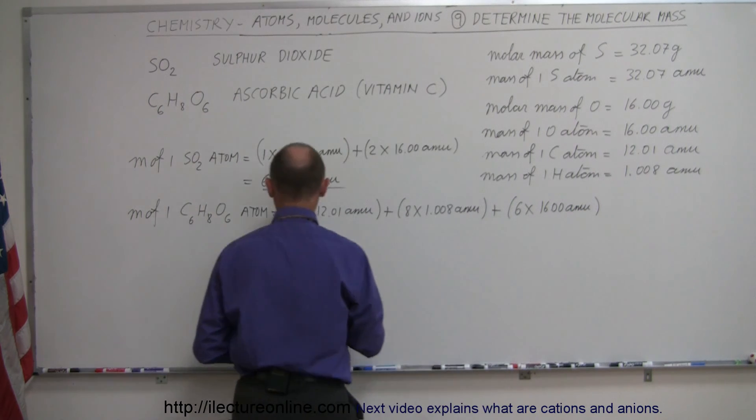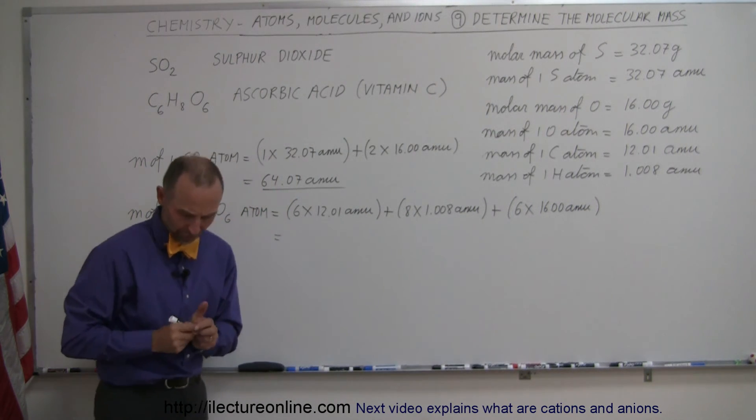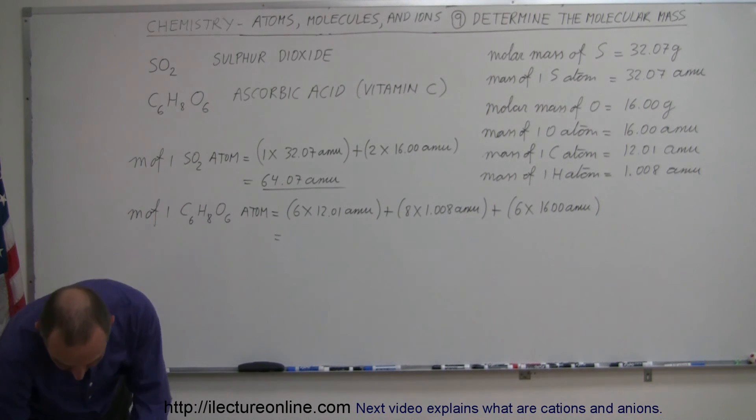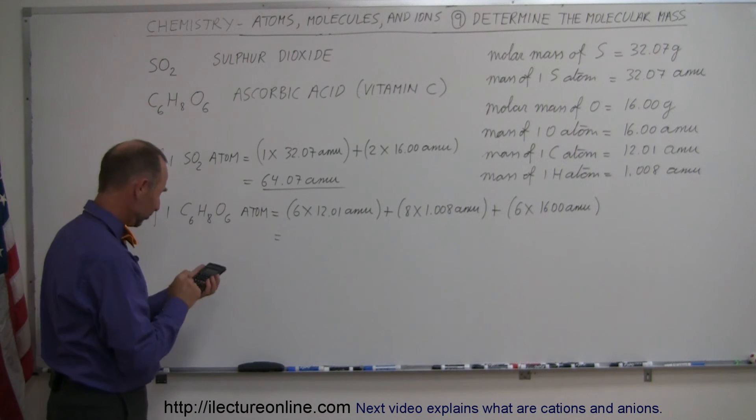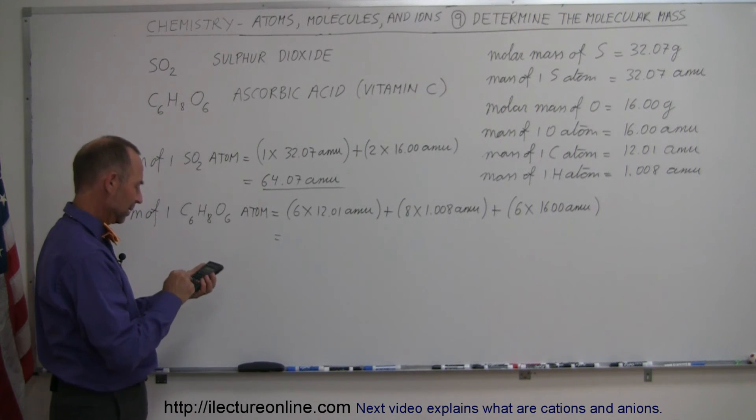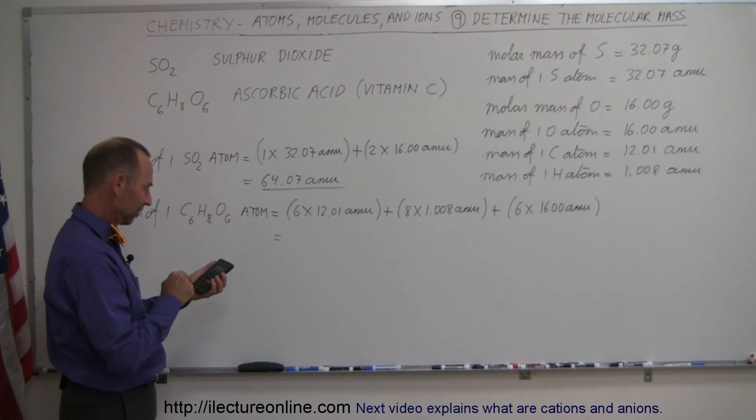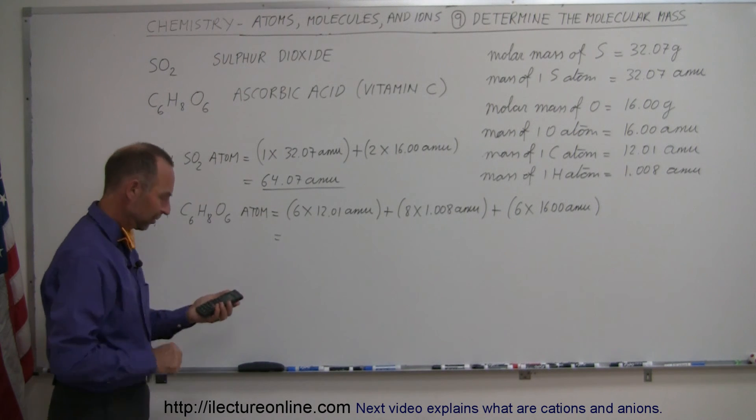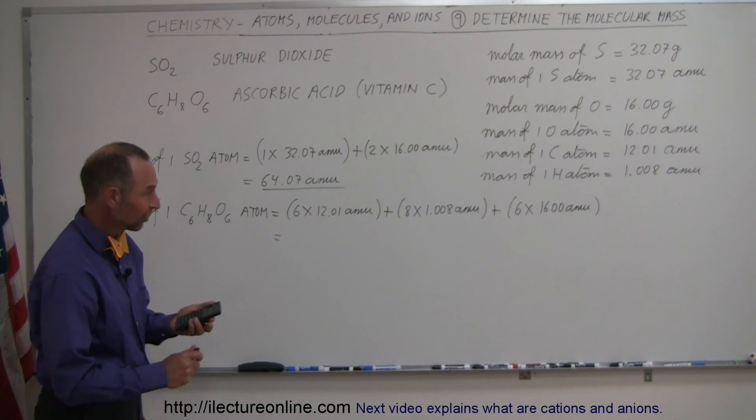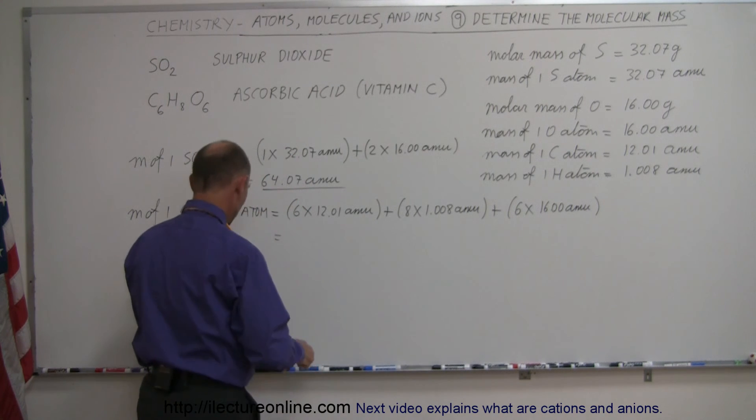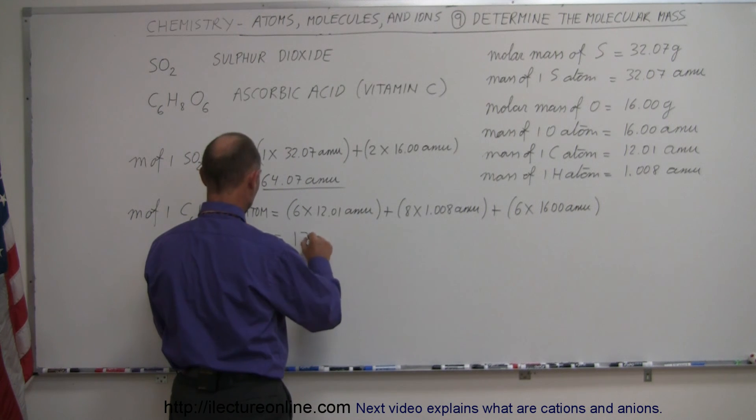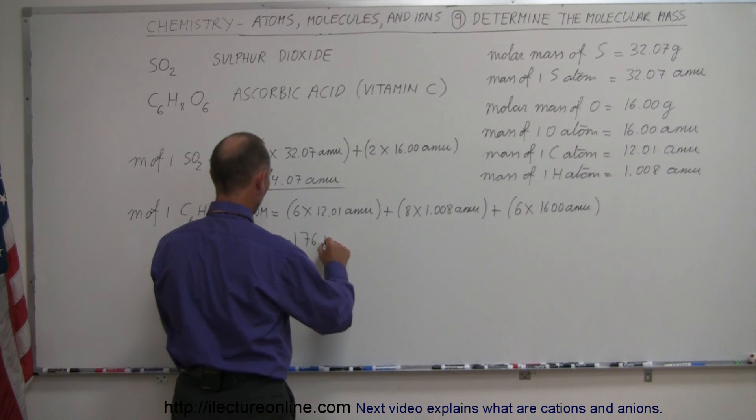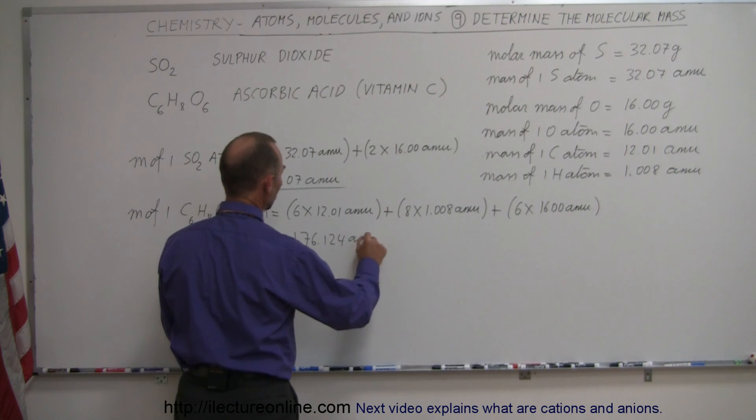And so finally, when we add all that together, and for that I'm going to use our calculator, if I can find it, it's right here. So we have 12.01 times 6, plus 8 times 1.008, plus 6 times exactly 16 equals, and so the total mass of one of those atoms would be 176.124 AMUs.